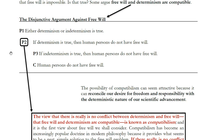So far we've looked at the structure of the argument, and we've seen the reasons for the second and third premises. We've seen the reasons why determinism is said to leave us with no free will. We've also seen the reasons why indeterminism is said to leave us with no free will.